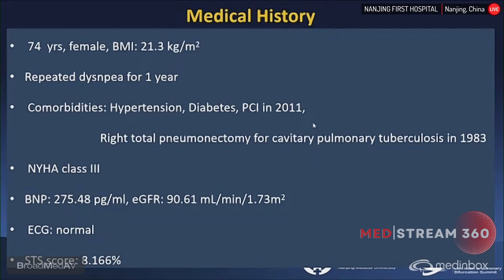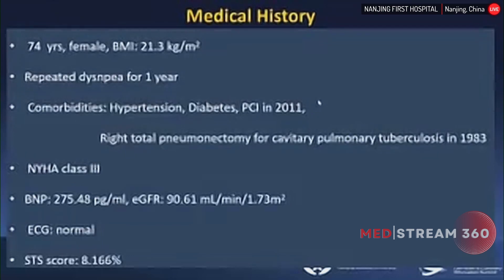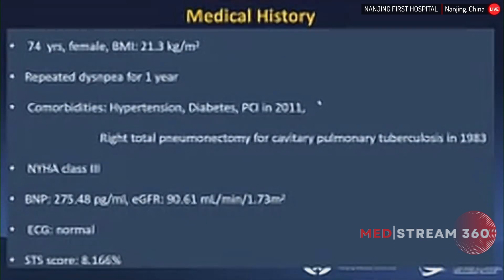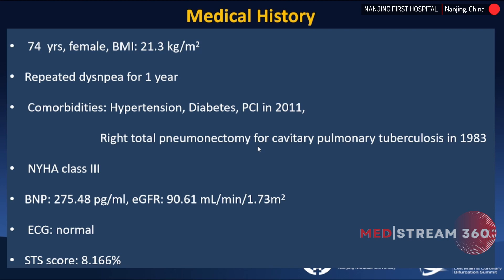This is a 74-year-old female, presented with repeated dyspnea for one year. This patient has quite a lot of comorbidities, including essential hypertension and diabetes. Five years ago, the patient suffered a heart attack and was treated with stenting in the right coronary artery and diagonal with a two-stent technique. This time the patient suffered heart failure, and echocardiography shows typical severe aortic stenosis with a bicuspid valve. The STS score is up to 80%, making this a quite high-risk patient for surgical valve replacement.